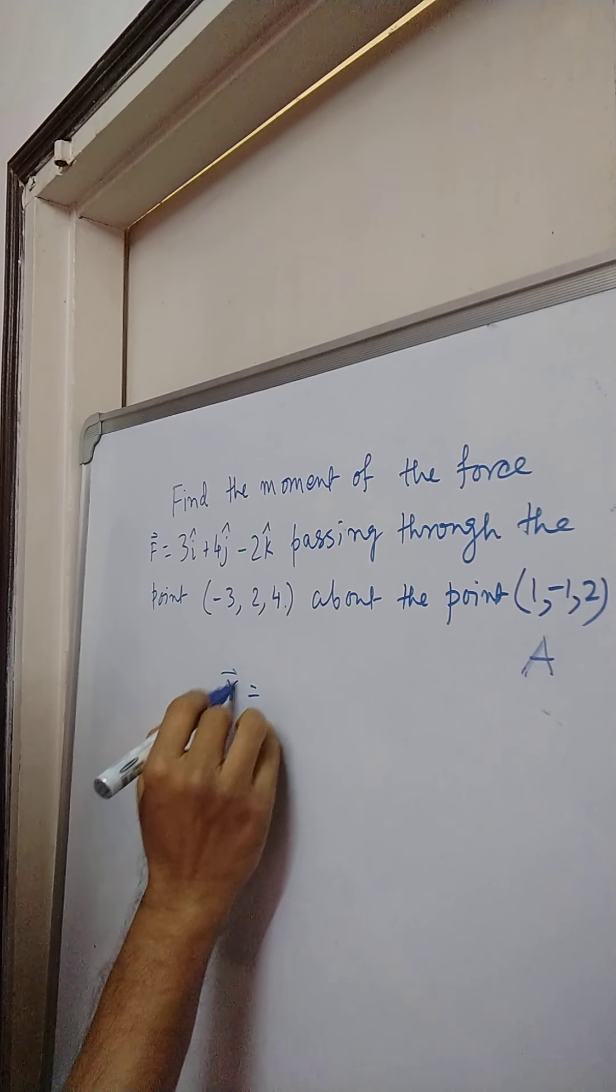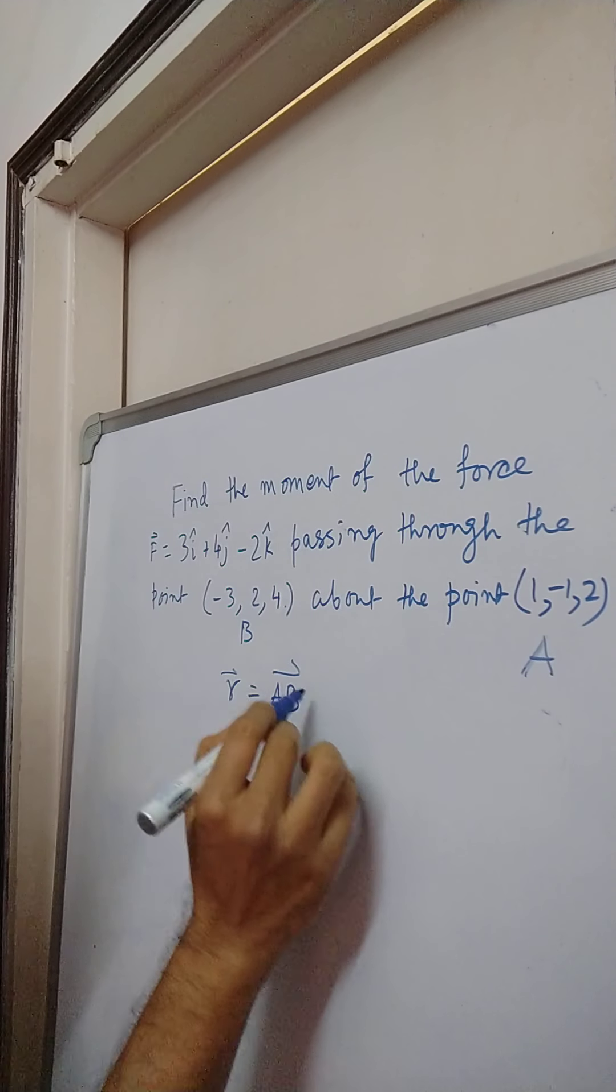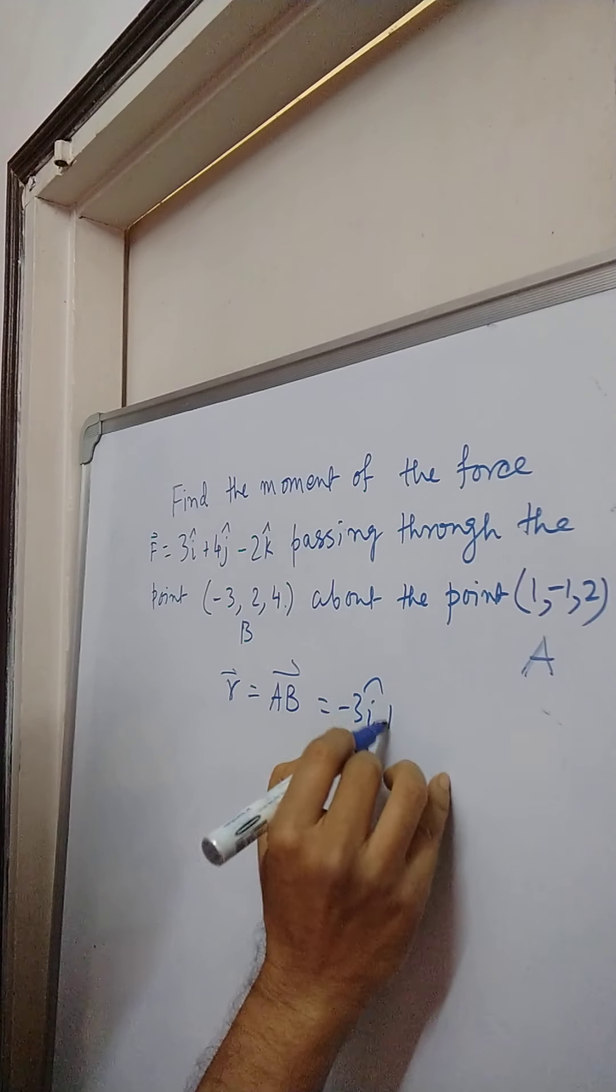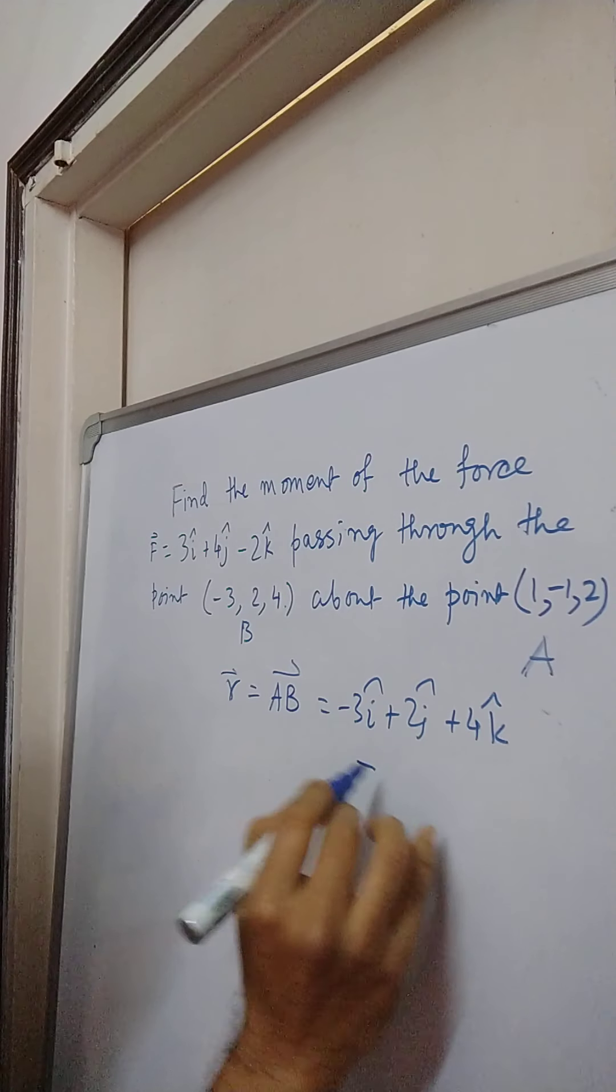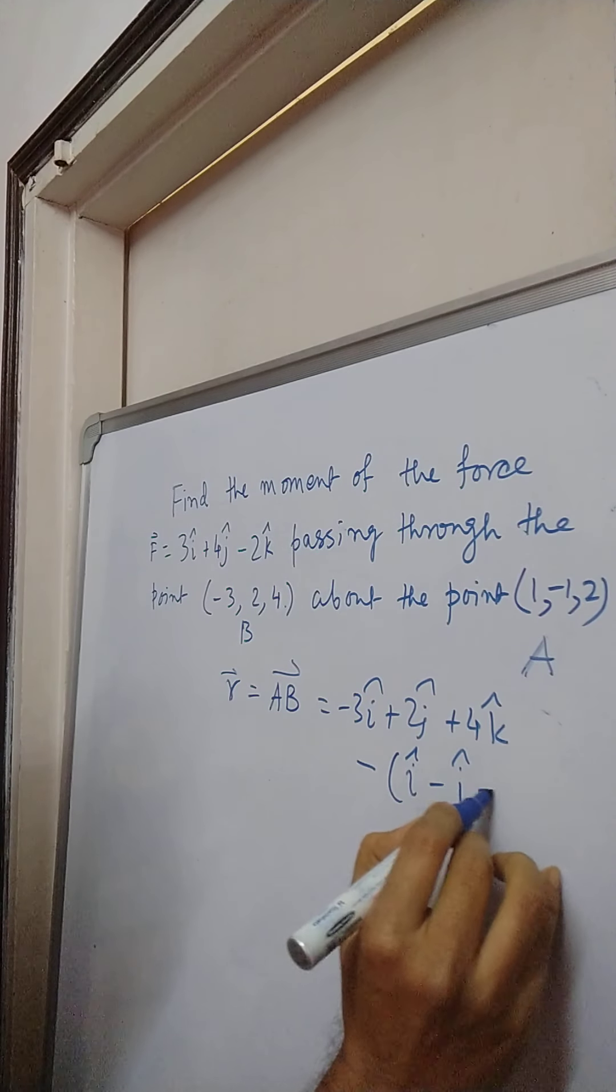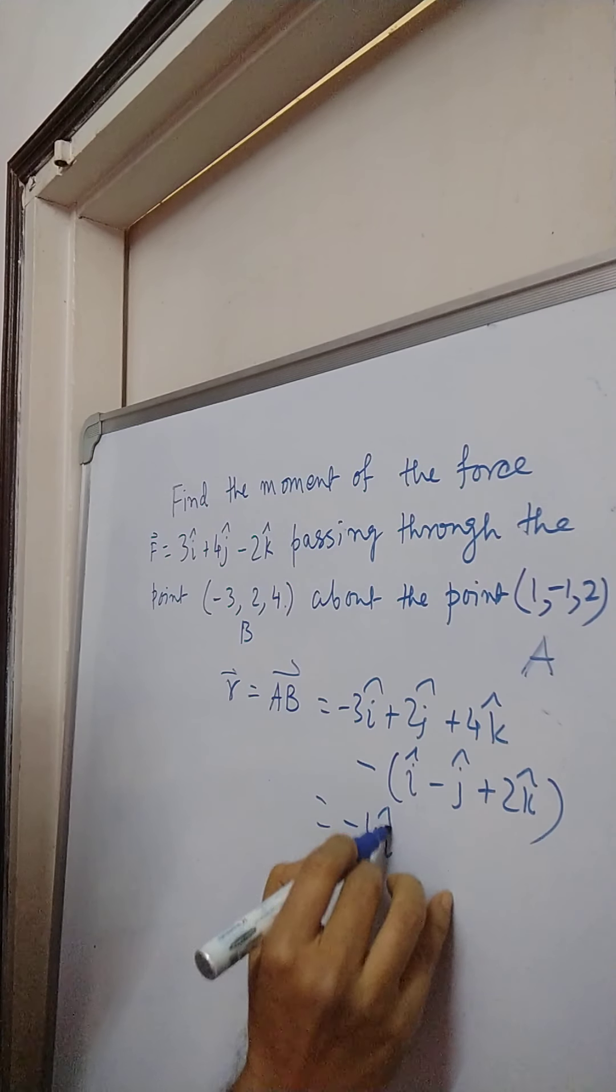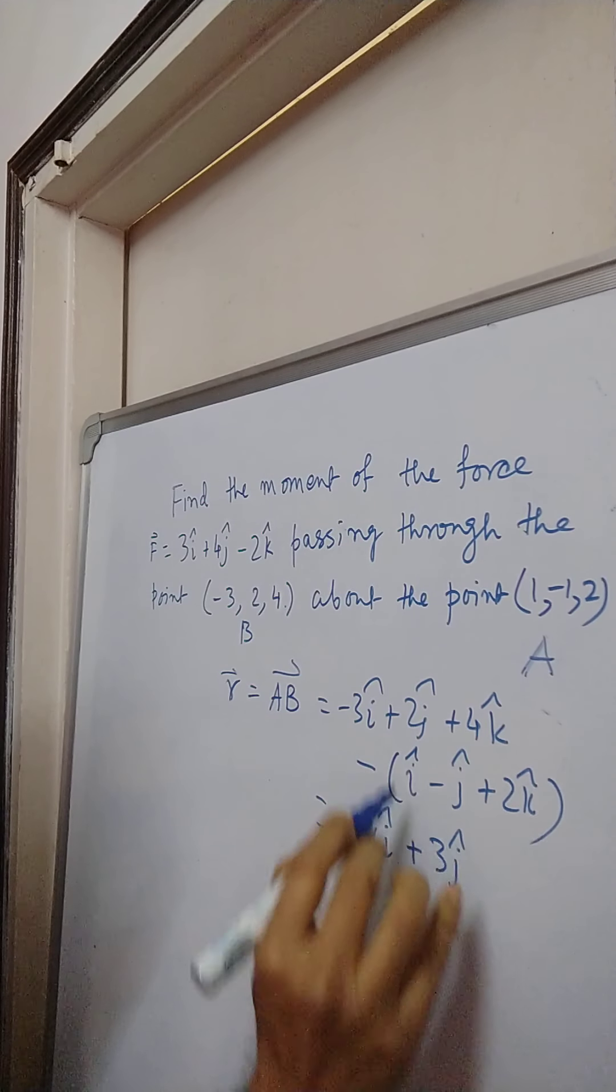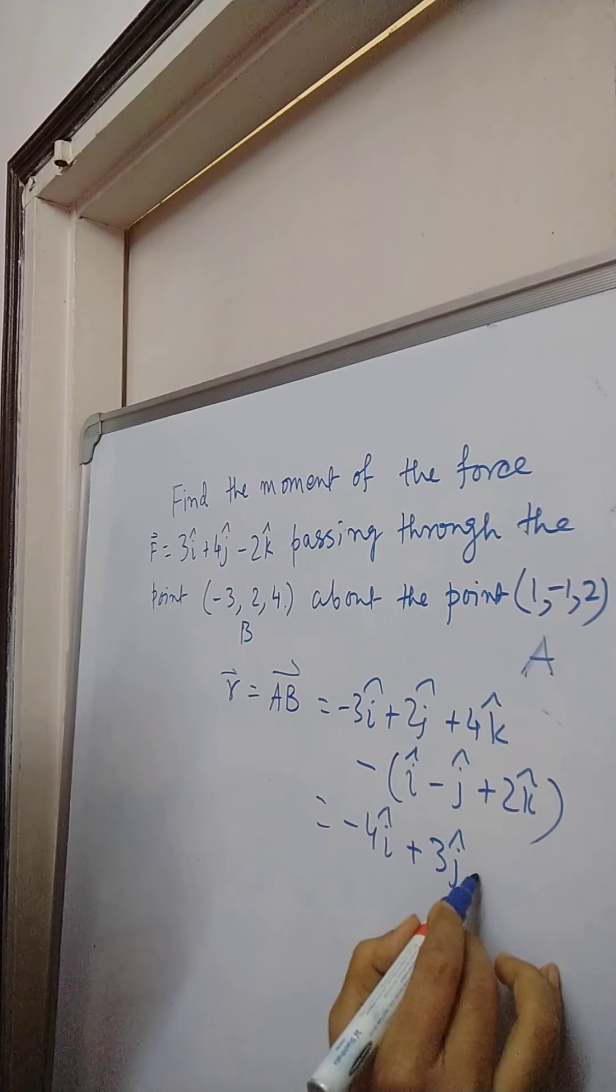R comes out to be AB. If this is A and this is B then obviously AB becomes minus 3i cap plus 2j cap plus 4k cap minus i cap minus j cap plus 2k cap and this turns out to be minus 4i cap plus 3j cap plus 2k cap.